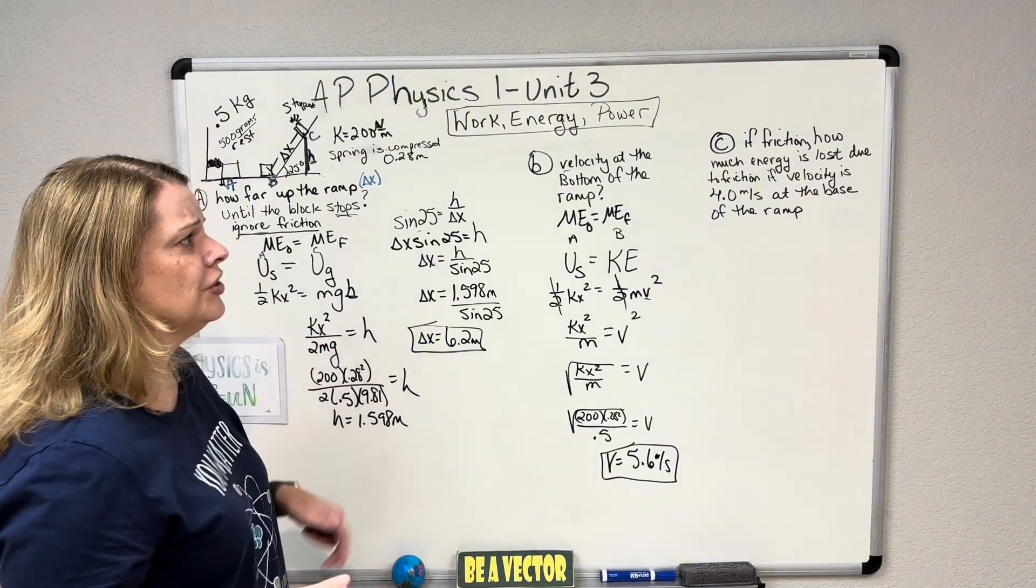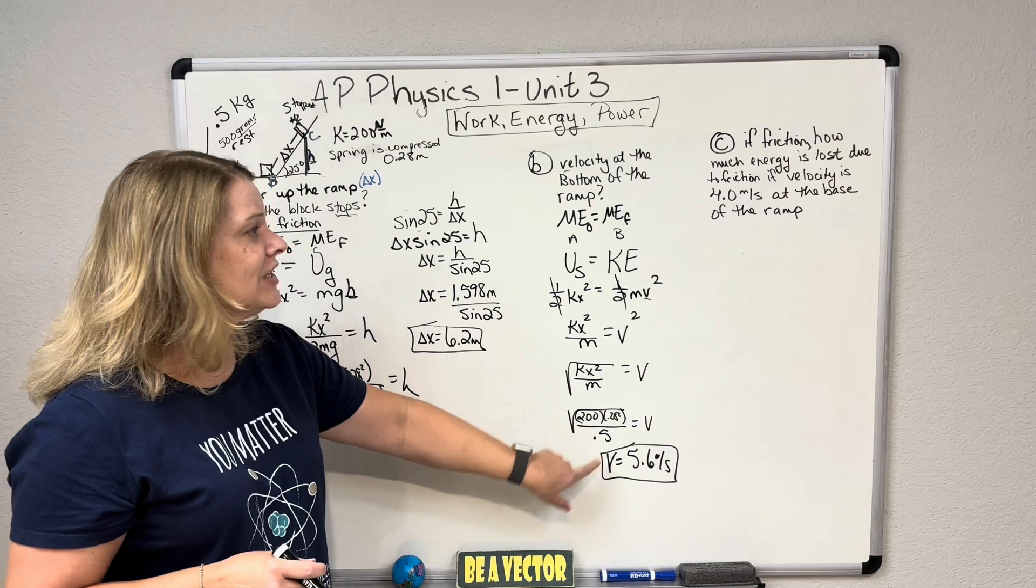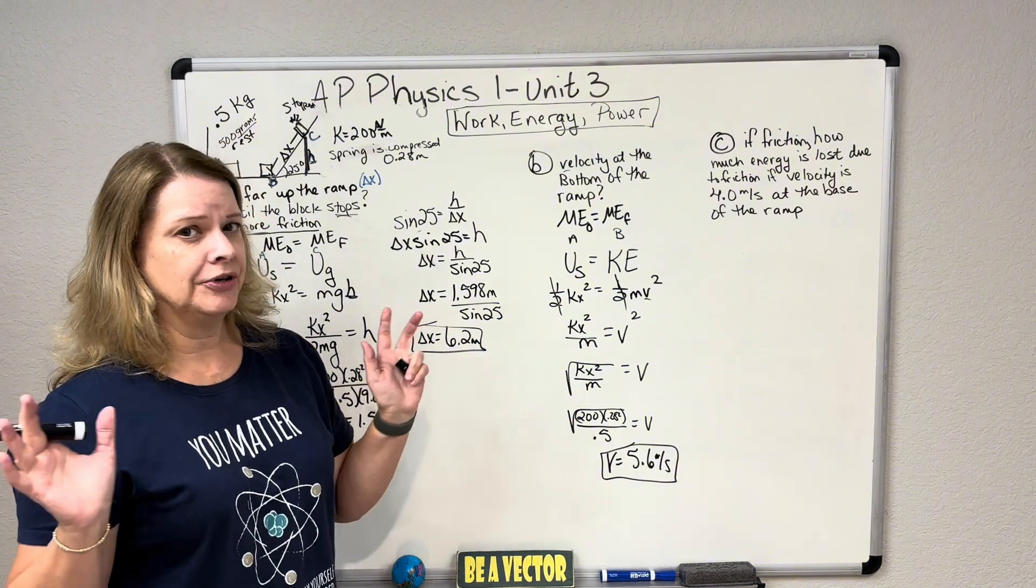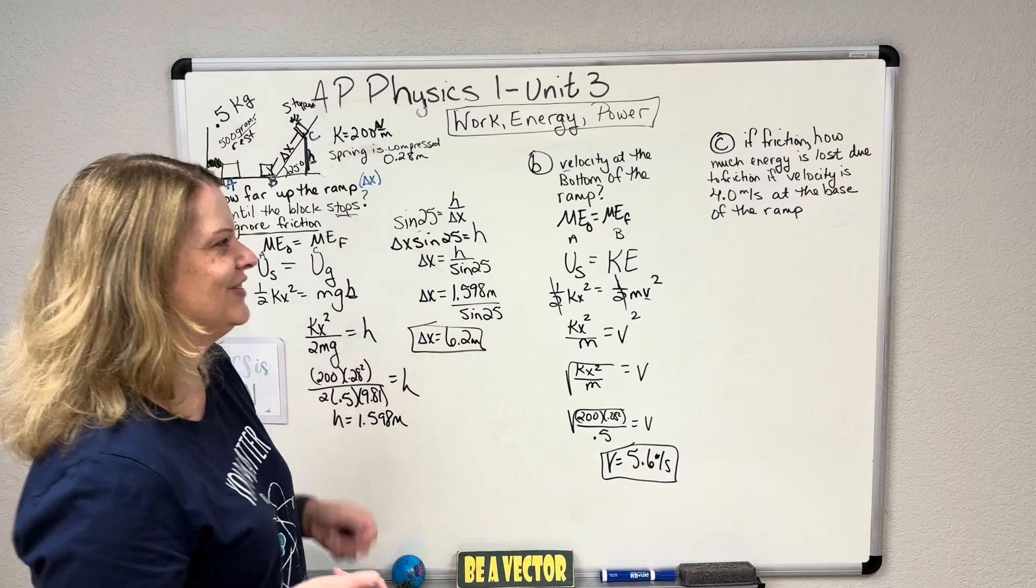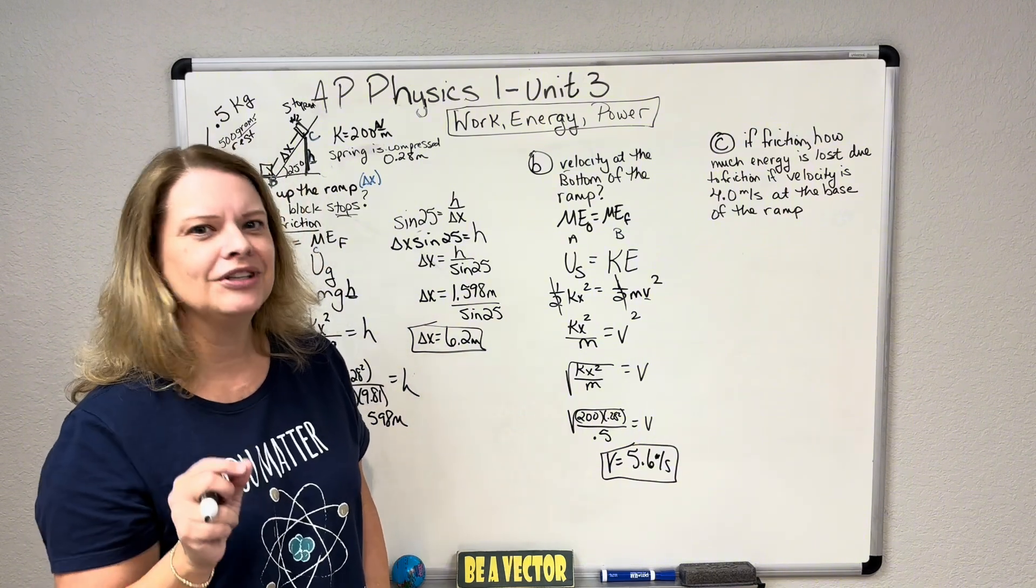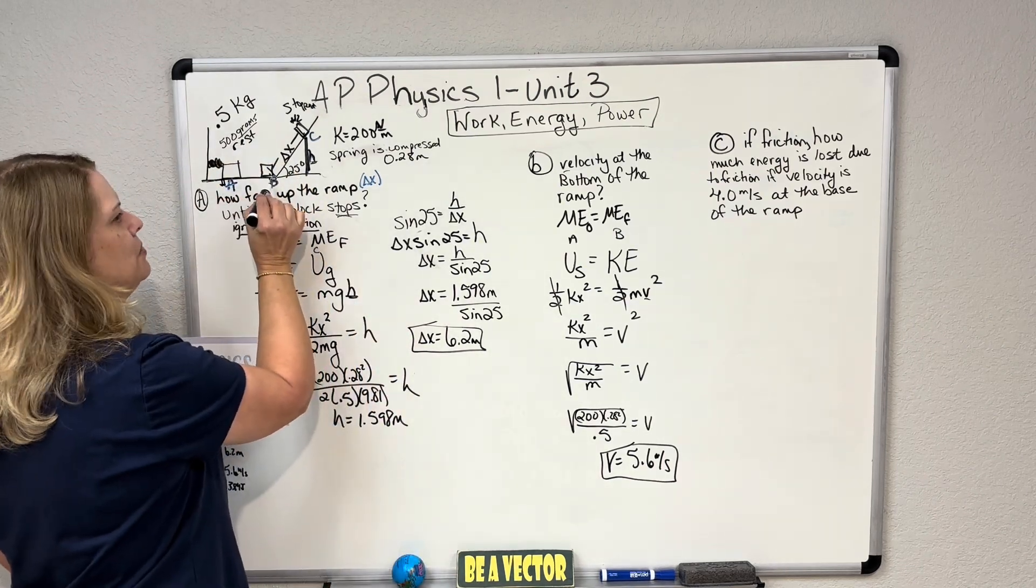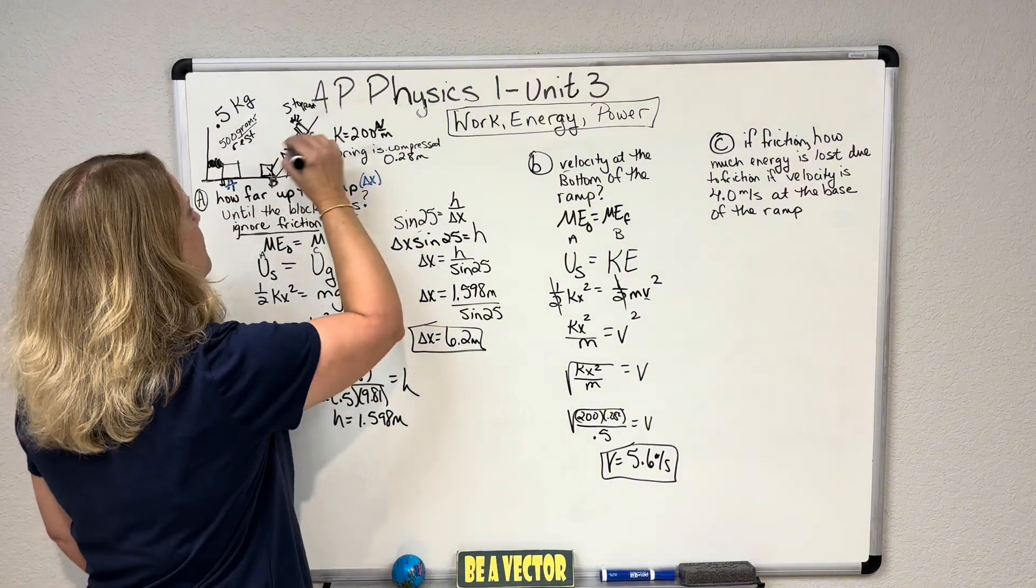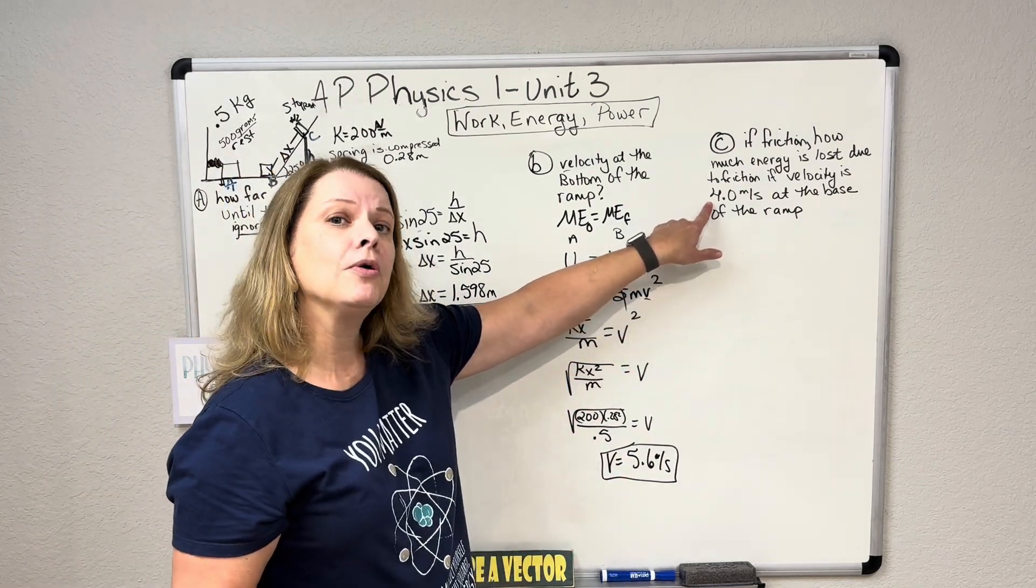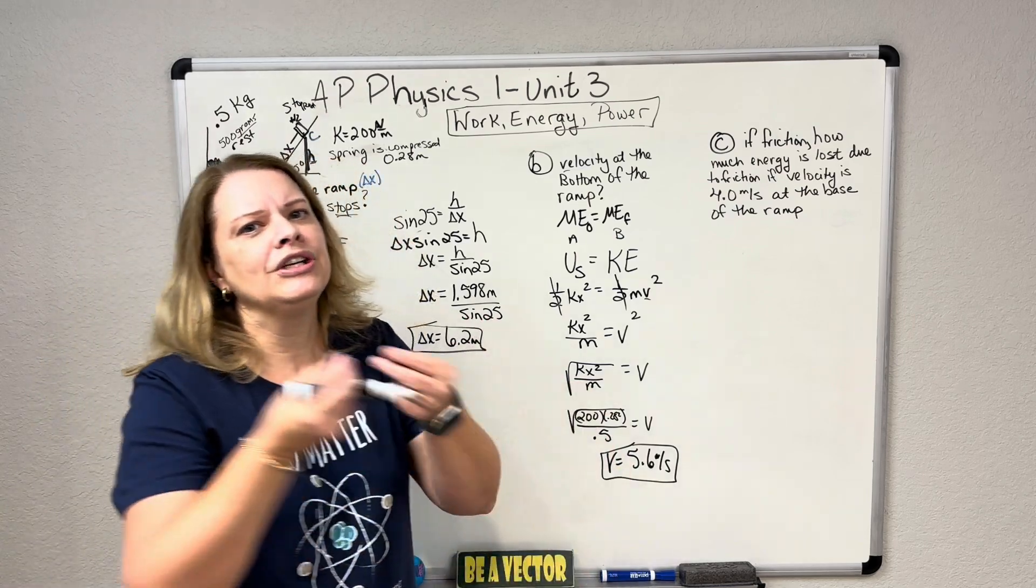Now it says, if friction, how much energy is lost due to friction? If velocity at the base of the ramp now is four meters per second, it's not 5.6. It's slower now because friction. We're not ignoring friction. In a completely different situation or different experiment, in an entirely different experiment, we are now counting friction. Friction is there, we're not ignoring it anymore. And we want to know how much energy was lost to that friction when it went from A to B, right at the base of the ramp. Velocity without friction was 5.6. Now velocity with friction is four meters per second. It slowed down. Why did it slow down? It slowed down because friction took energy out of the system.